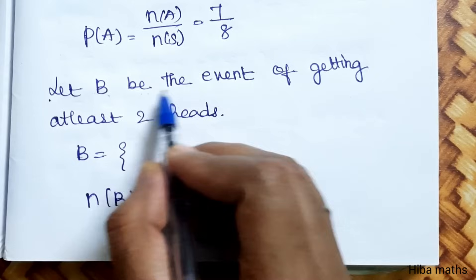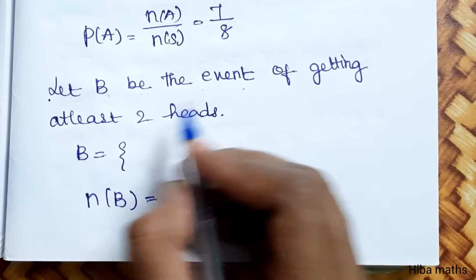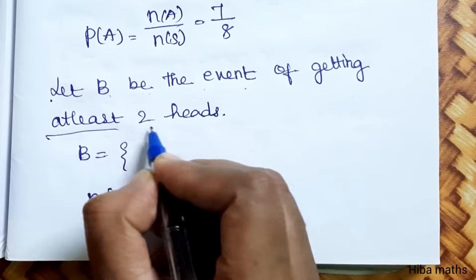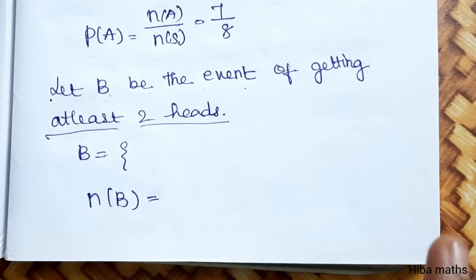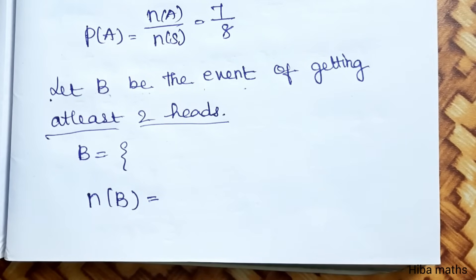Let B be the event of getting at least 2 heads. 'At least 2 heads' means 2 heads or more — that is, 2 heads or 3 heads.